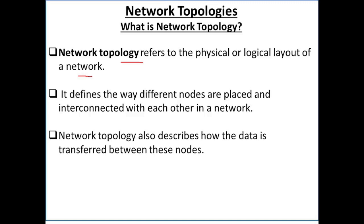Network topology mein kisi bhi network ki logical layout ko bhi define kya jata hai — means ek network ke andar data ek device se dusre device pe kaisi jayega, matlab kaisi transmit kya jayega. It defines the way different nodes are placed and interconnected with each other in a network.